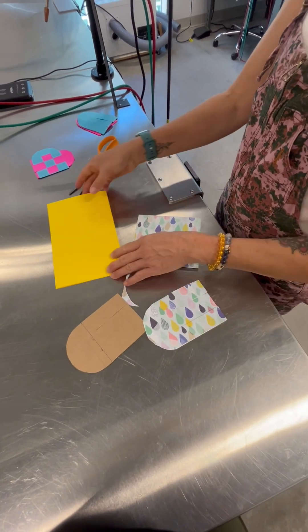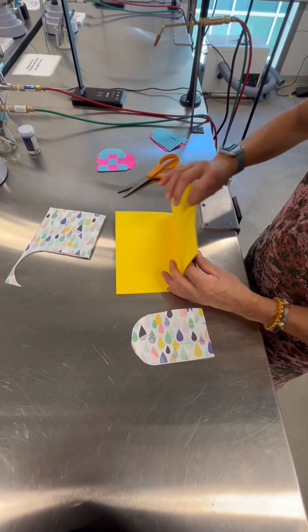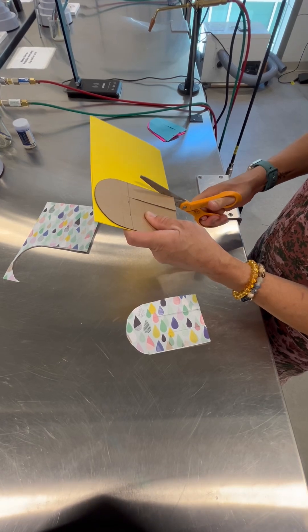And then repeat that with your other piece. Folded side here, rounded side is the open side. Trace or just cut around the template.